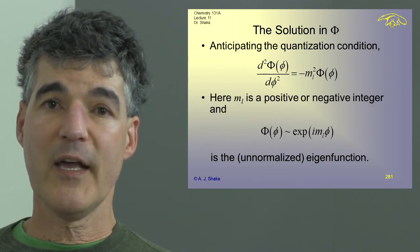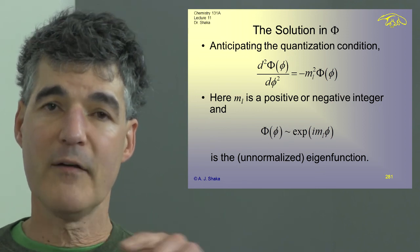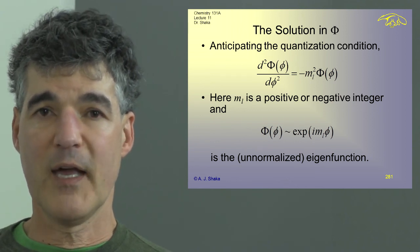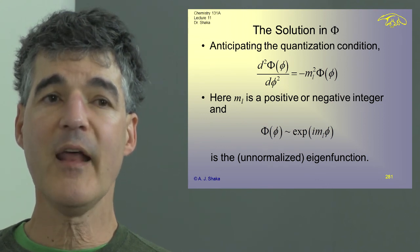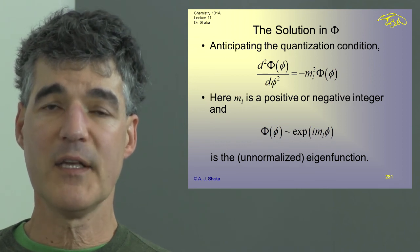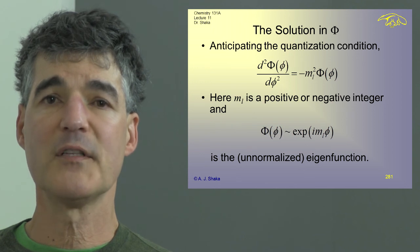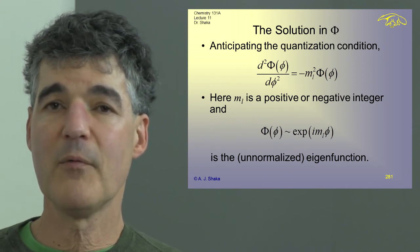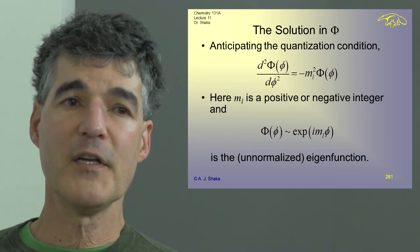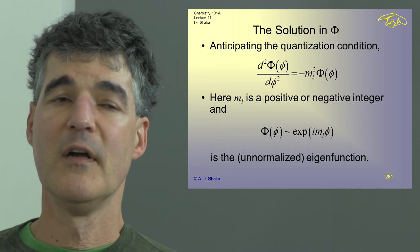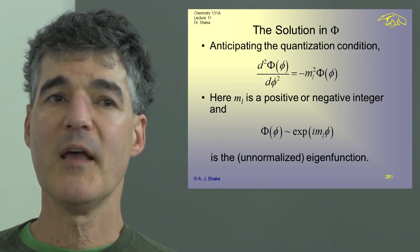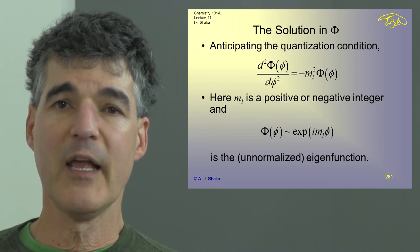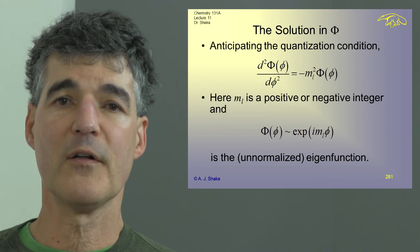We anticipate that we're going to have a quantization condition because we know we have some sort of a bound system. We saw before that we had a quantum number M, which I called the magnetic quantum number. I'm now going to call this new number M sub L to keep track of the fact that M may depend on something else. The eigenvalue equation is that the second derivative of phi of phi is equal to minus M sub L squared times phi of phi. Here M sub L is a positive or negative integer and could even be zero, just like it was for the particle on a ring.